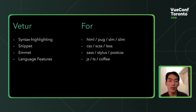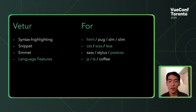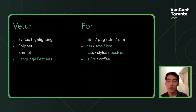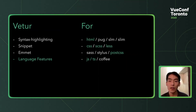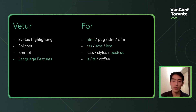Vetur tries to offer these four core functionalities for all those languages, but for language features, Vetur only offers them for HTML, CSS, SCSS, LESS, PostCSS, JavaScript, and TypeScript — because they already have libraries that implement language features for them, so I only need to integrate them together. For Pug and SCSS, I know they're super popular, and one day if I have time, I want to offer better editor support, but those require writing a language server from scratch, which I don't have enough time for right now.